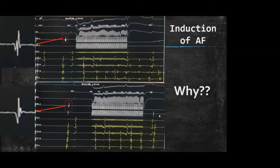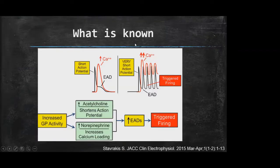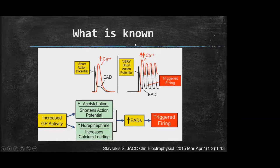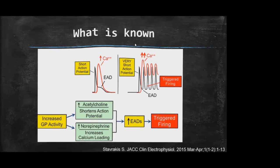According to our electrogram-guided strategy, fragmented electrograms clearly demonstrate GP localization. But during HFS application, we sometimes just induce atrial fibrillation without seeing any vagal response. This occurs because increased GP activity causes shortening of action potential duration in pulmonary vein myocytes, leading to early after-depolarization and triggering pulmonary vein firing. So, inducing atrial fibrillation is the main limitation — we may actually be in the GP site but not get a positive vagal response to confirm it.